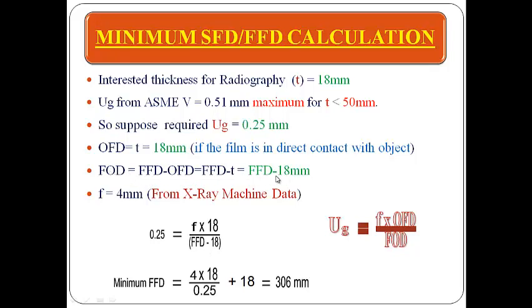We substitute FOD as FFD − 18 mm into the equation. Solving this equation gives us the minimum required FFD, which is 306 mm.